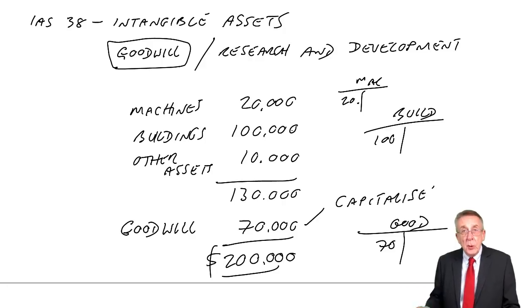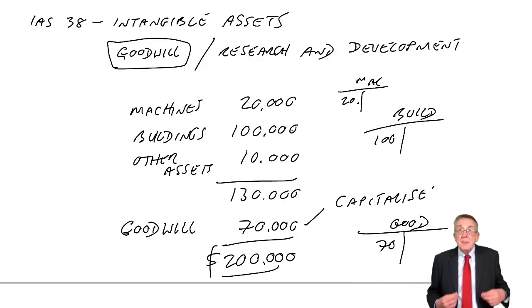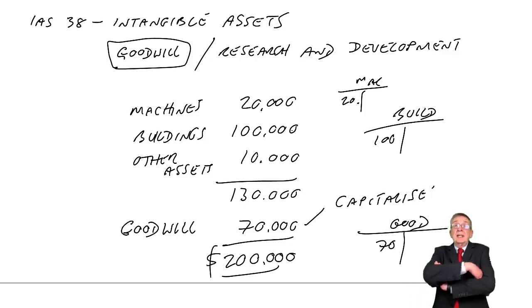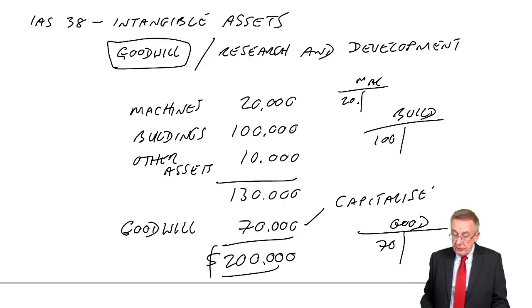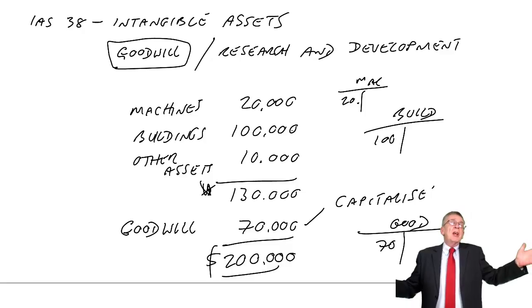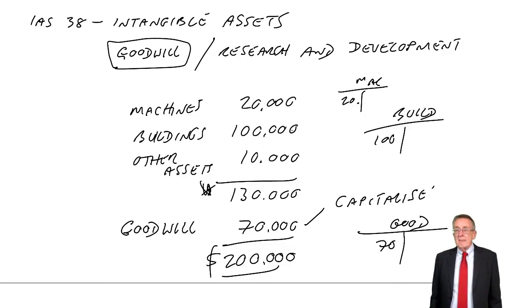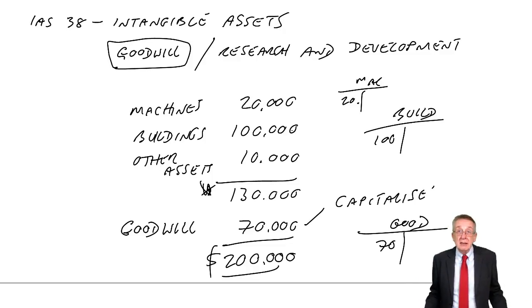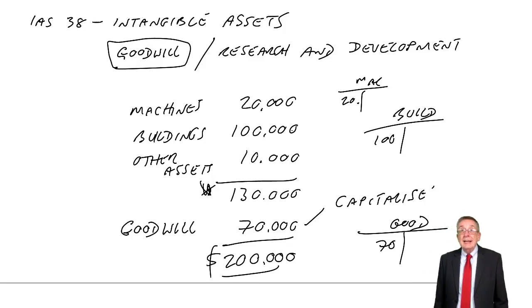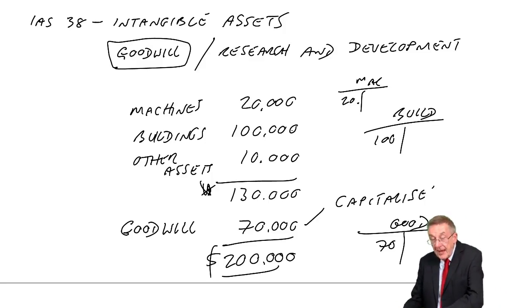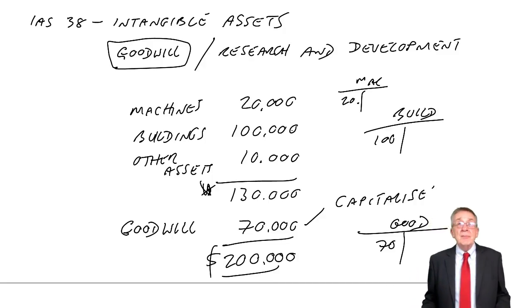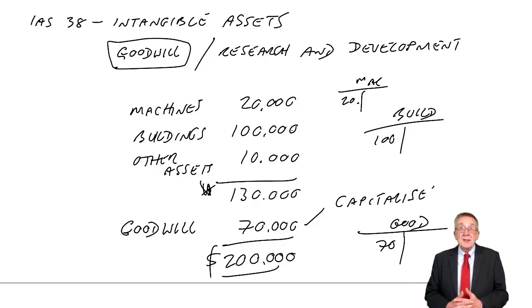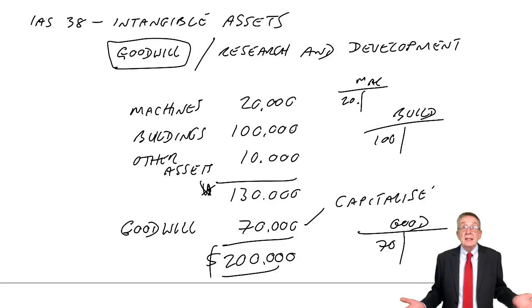However, only when it's goodwill we've bought. Here, I bought another company and actually paid an extra 70 for the goodwill. But forget buying another company. I could say my own company — its assets are only worth 130, but I know it's worth a lot more because of goodwill. Well, I cannot put that in my statements. How do I know the true value? We can't. You can only show goodwill if you've actually paid for it, like buying another company. You can't show it when you haven't paid for it, when you've just grown it yourself.